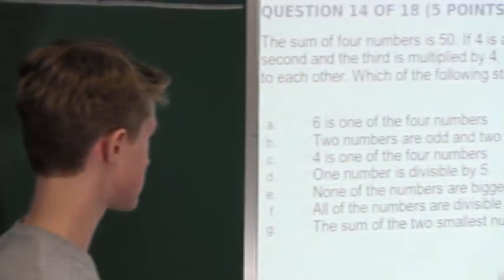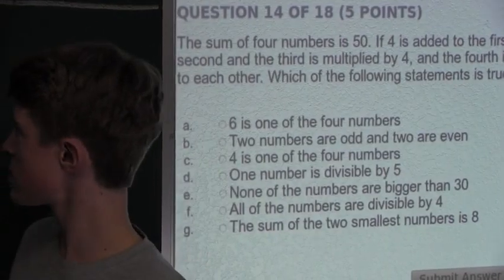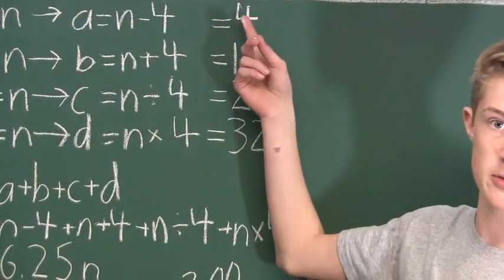Now, C says four is one of the four numbers. Well, this is correct. We know one of the four numbers is four.